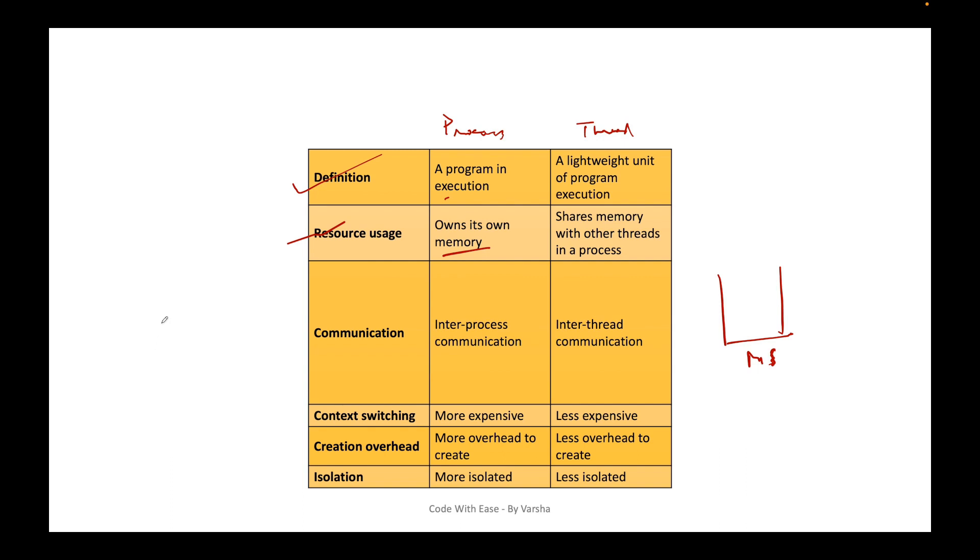That is why you are taking up less resources. You don't have a separate knife for friend number one or friend number two. Threads are sharing the memory with other threads in a process. That is why the resource usage is less, and because resource usage is less, it is called lightweight.